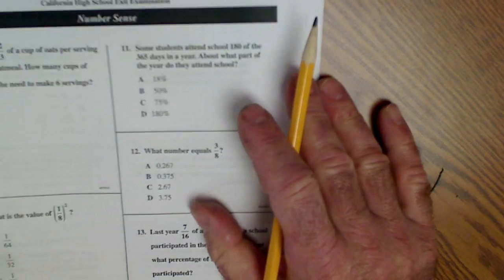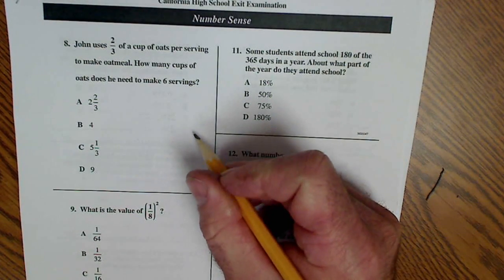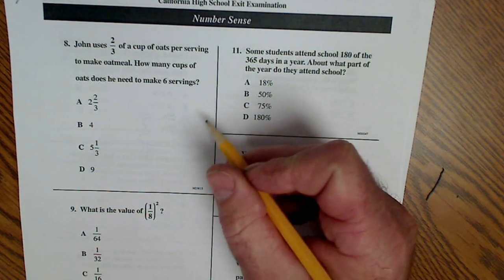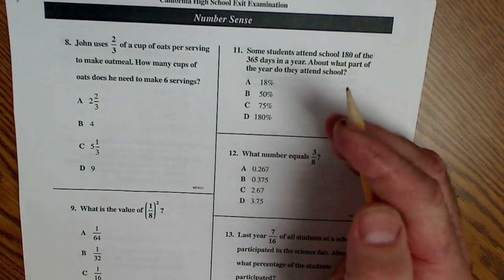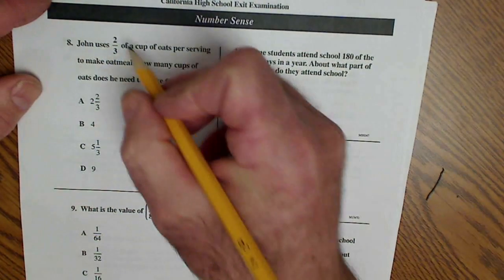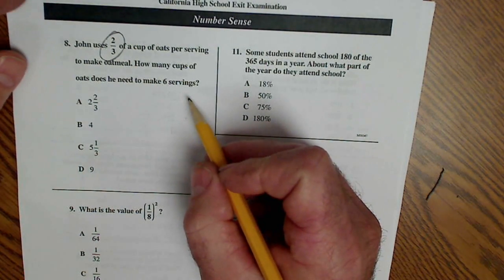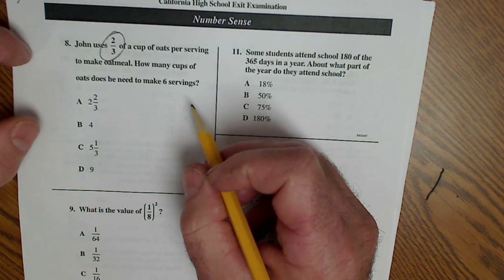So let's take a look at the high school exit exam. First thing you want to do is really make sure you're timing yourself well. So if you have 30 problems in 30 minutes, you never want to spend more than about a minute a problem. You want to mark up the problem as much as you can, circling and marking important notes.